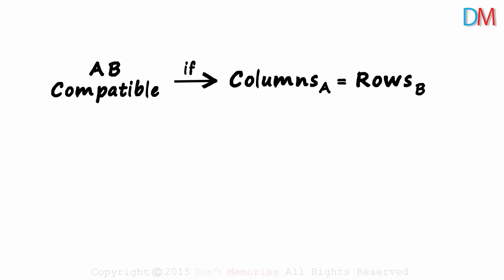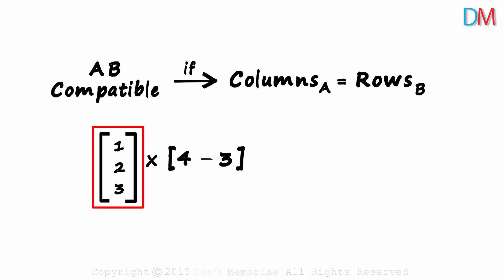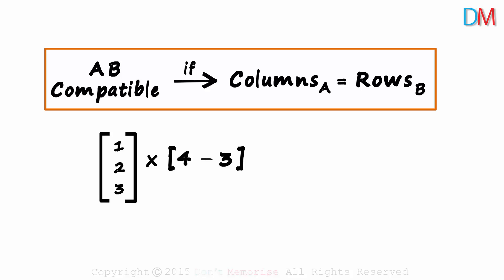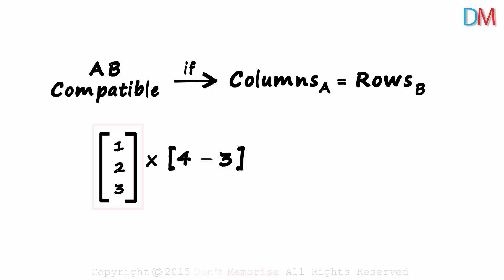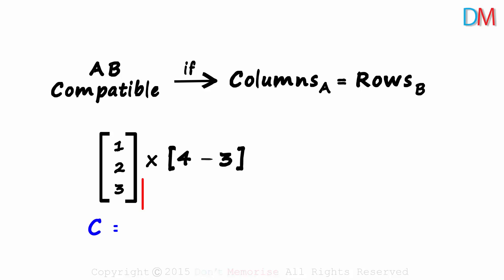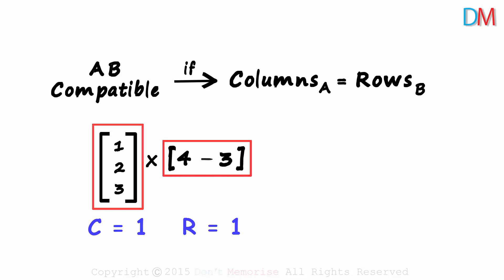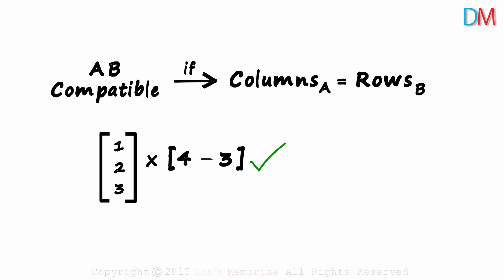Let's see a couple of examples. Can this matrix be multiplied with this one? We don't have to multiply, we just need to check the compatibility. AB is compatible if the number of columns in A is equal to the number of rows in B. Here the first matrix has one column and the second matrix has one row. Since the number of columns equals the number of rows, this multiplication is possible.